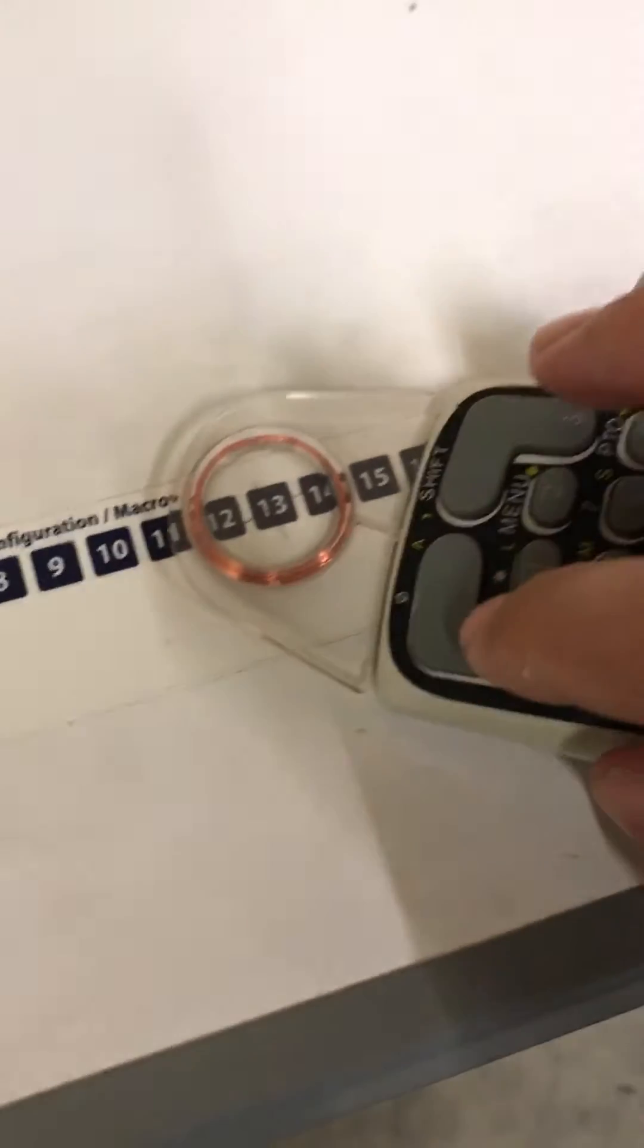Now what you do whenever it's wrong: if you just click the one button on the number, the light will change to on or off as you click each time. That's how you make it correct.